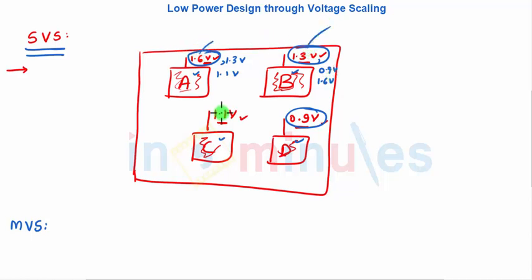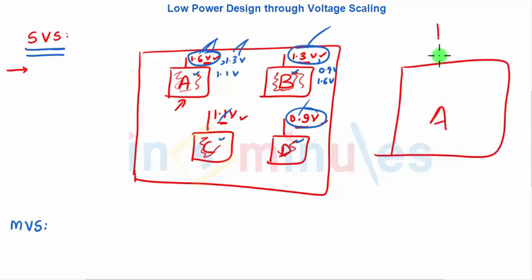Basically what we are trying to do is here in this case the supply voltage can be switched between two or more fixed voltages. So it can be one of—this could be 1.6, other one could be 1.3 and so on. And at different instances of time, the different blocks of the circuits can operate at different voltages.